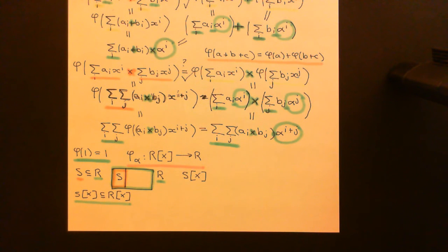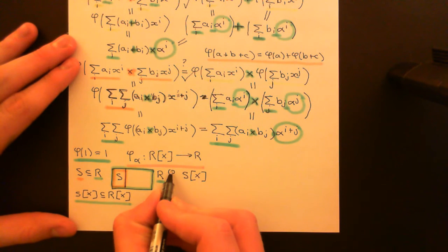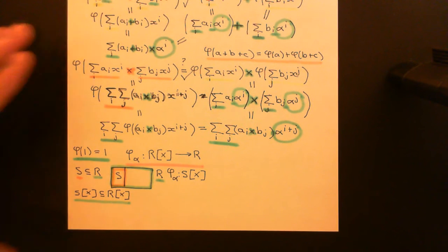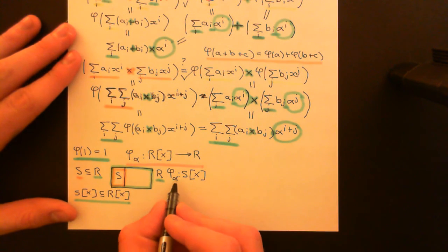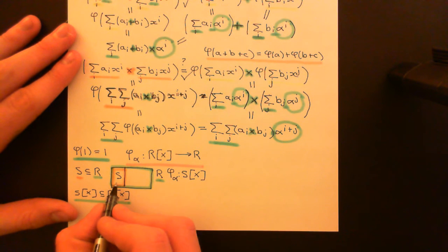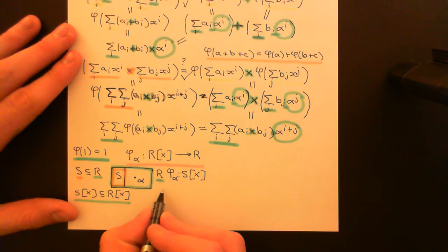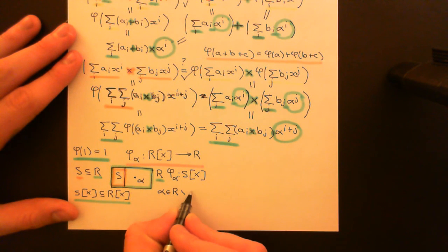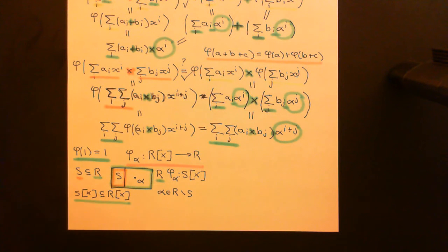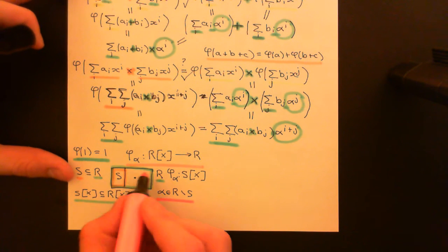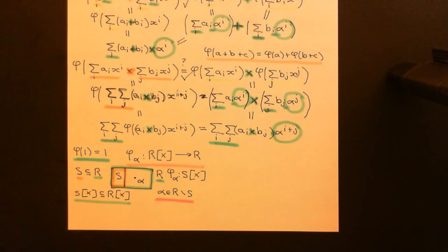The interesting thing is to now consider the evaluation homomorphism, which will evaluate the polynomials in the ring of polynomials over the sub-ring capital S. But instead of picking alpha that's in S, let's pick alpha that's outside of S. So let's suppose alpha is in the larger ring capital R but it's outside of S — it's in the complement of S. That's something you couldn't previously do. When we were just talking about a single ring capital R and taking the ring of polynomials over that ring, we couldn't talk about having an alpha that was outside of capital R. That's why we're pushing it now — we're now going to evaluate these polynomials using some element that's outside of the coefficient ring.